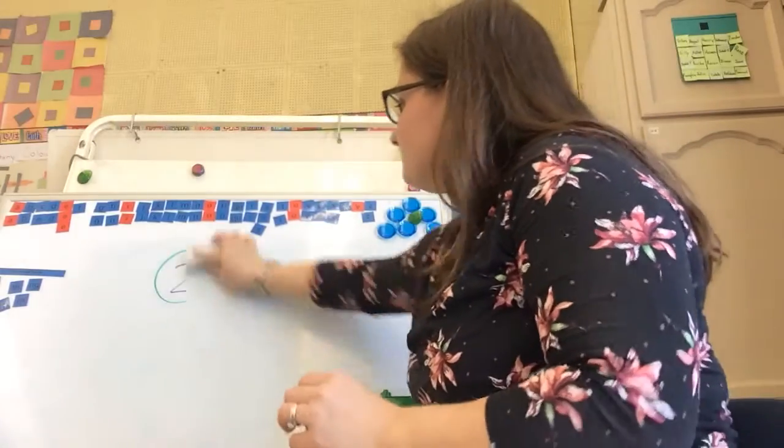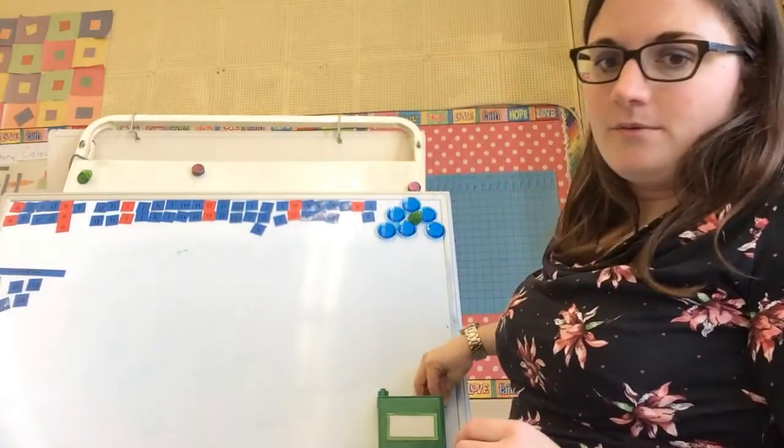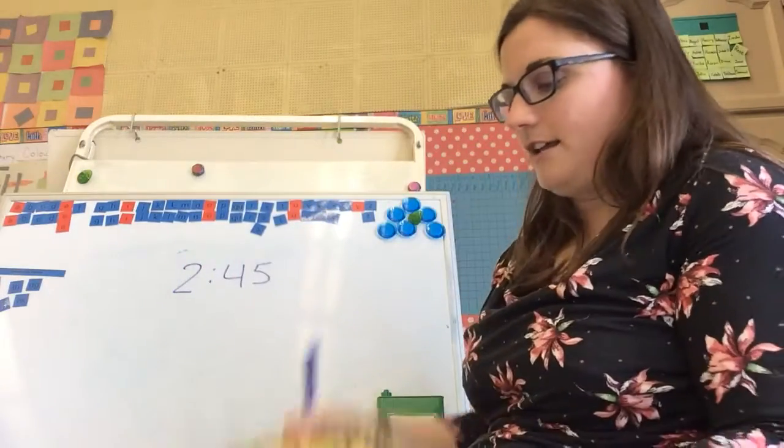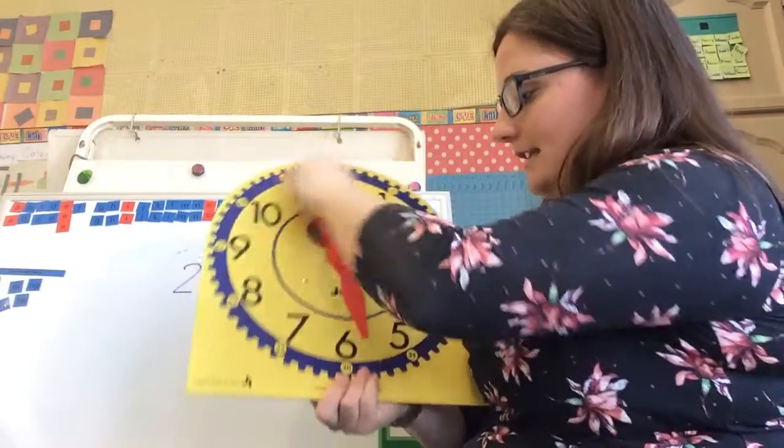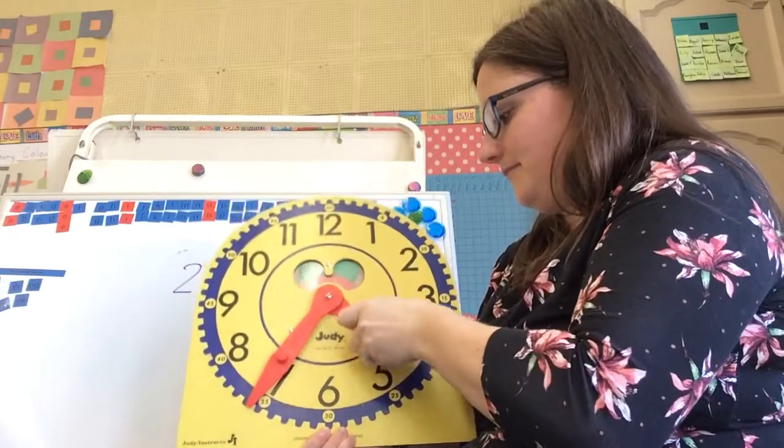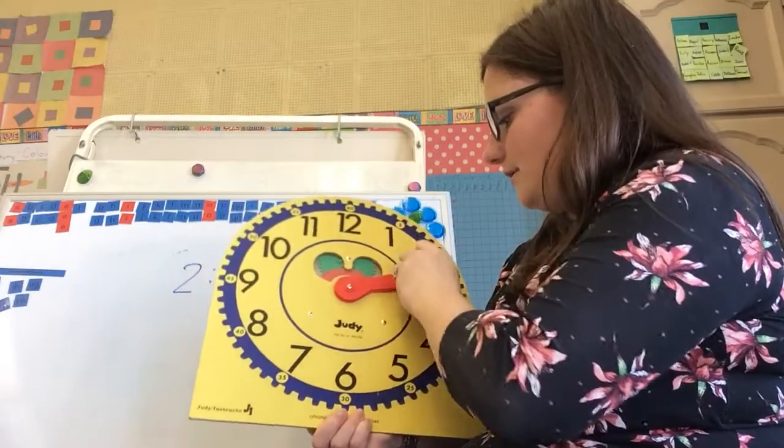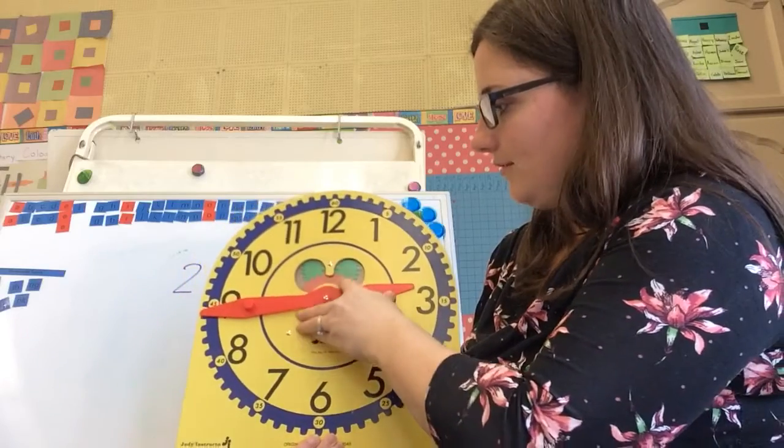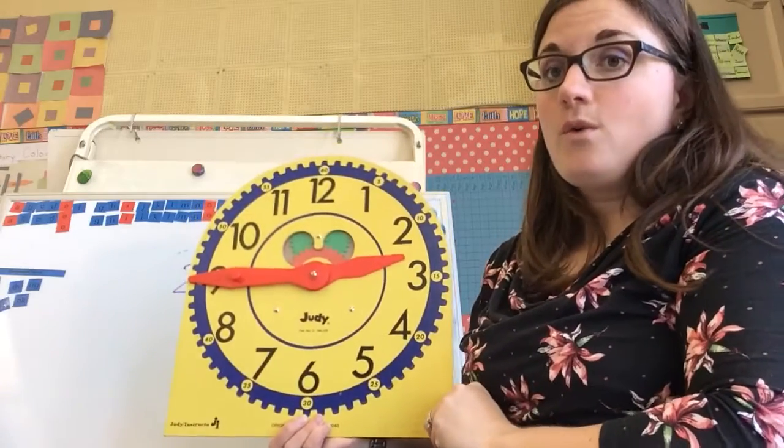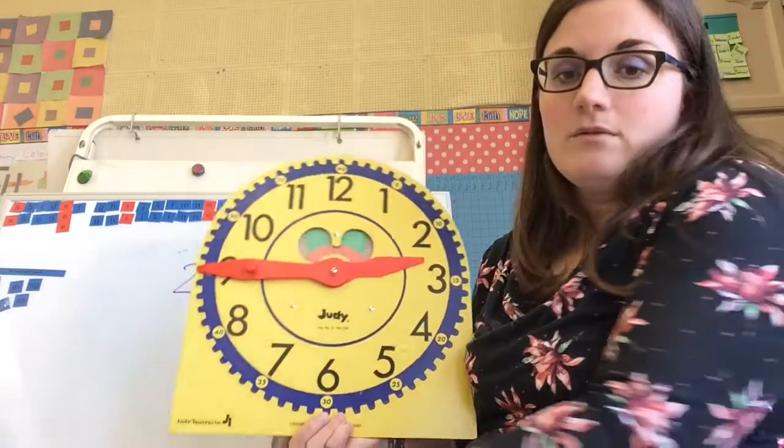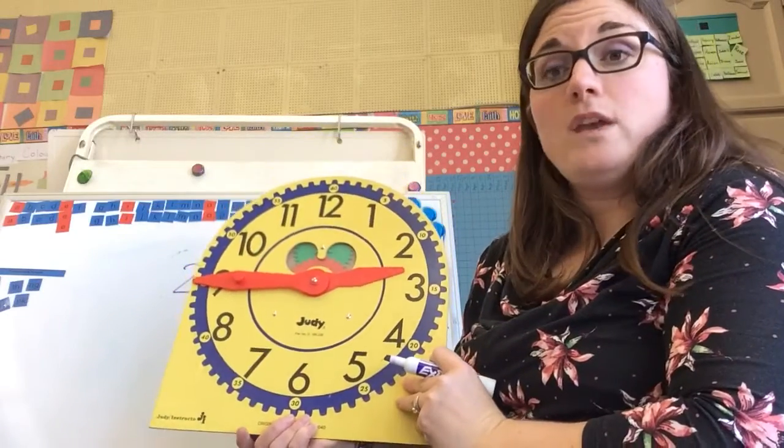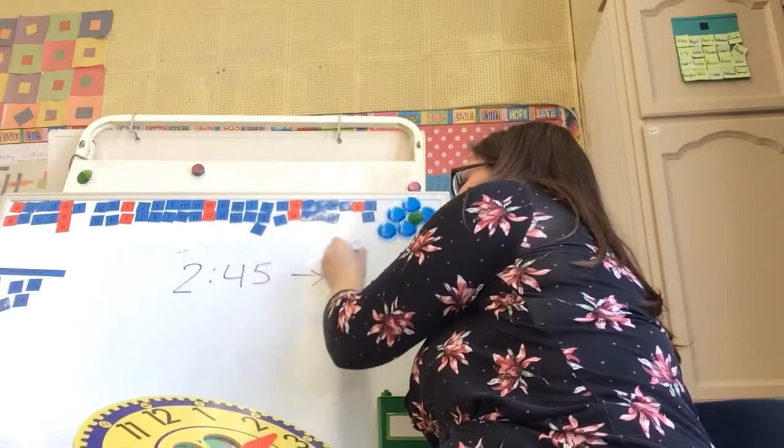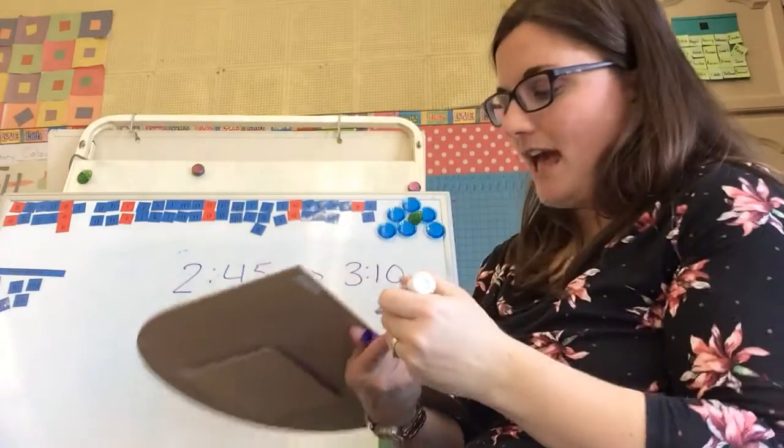Now we're going to start at another time here. We're going to start at 2:45. I'm going to get my clock at 2:45, so 2 and then I take it over to the 45 mark. It looks a little bit like 3, but that's okay. 2:45. Now I want to say that we are going to do spelling and handwriting until 3:10, so 10 minutes past 3.